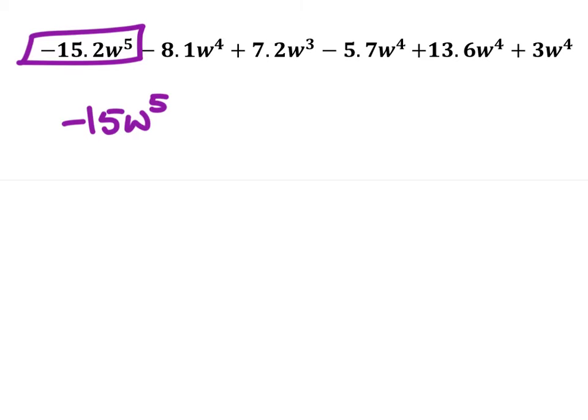And that takes us to the next term, which is negative 8.1w to the power of 4. Now, once again, I don't care so much about the coefficients of w to the power of 4. I'm only considering the unknown or the variable and its power. Well, I have these other ones here as well, which means I could combine all of these together.